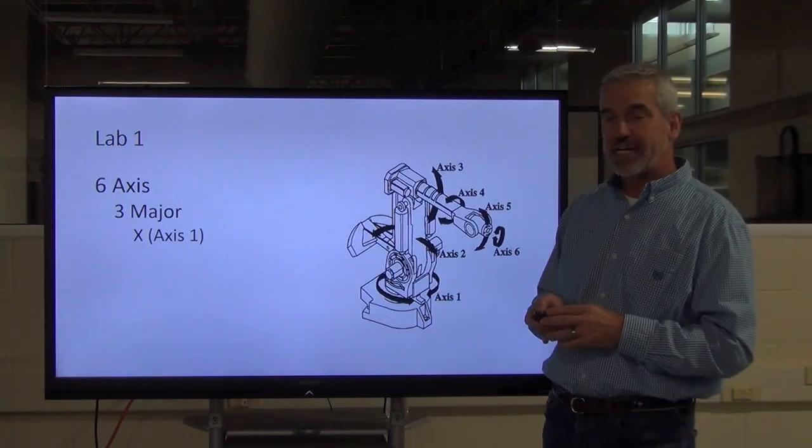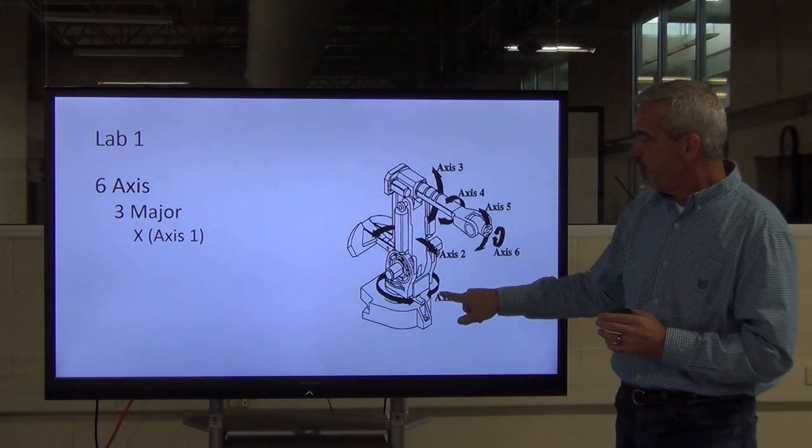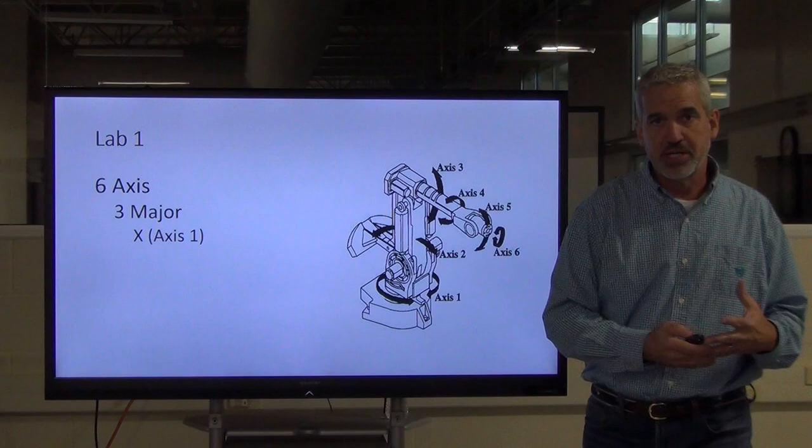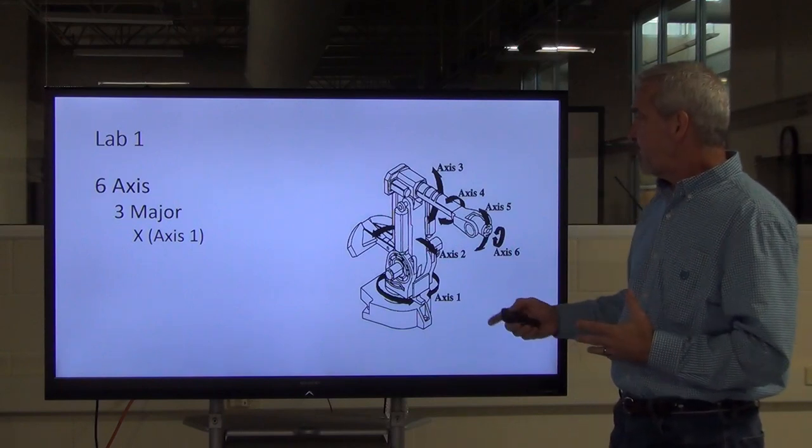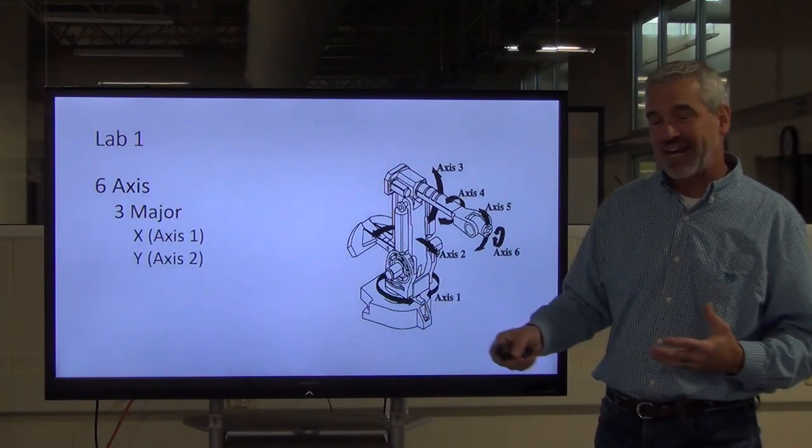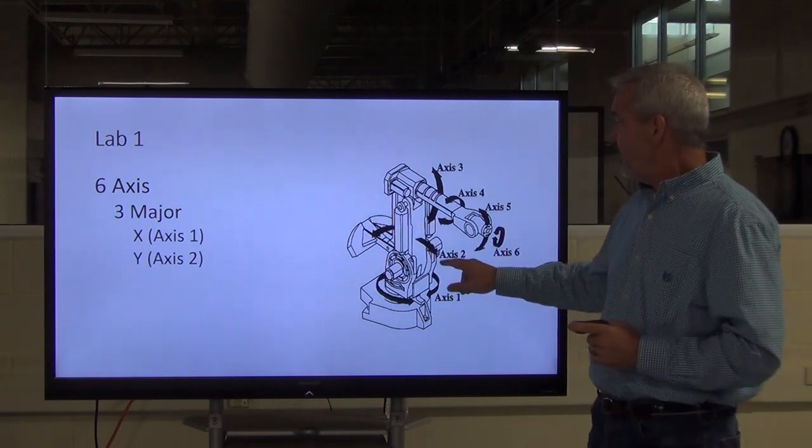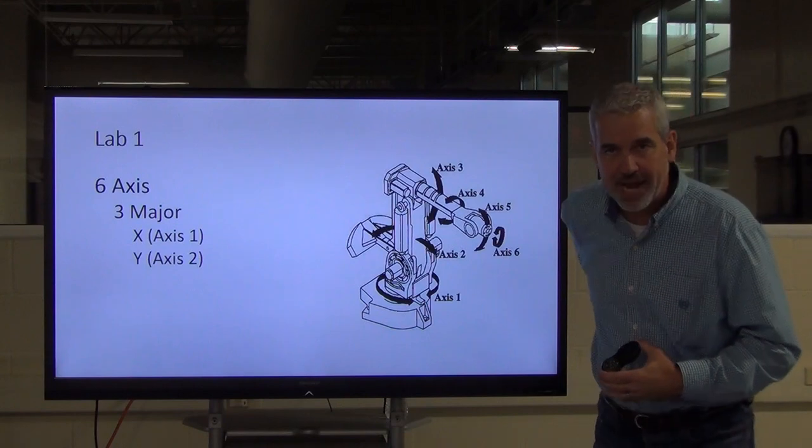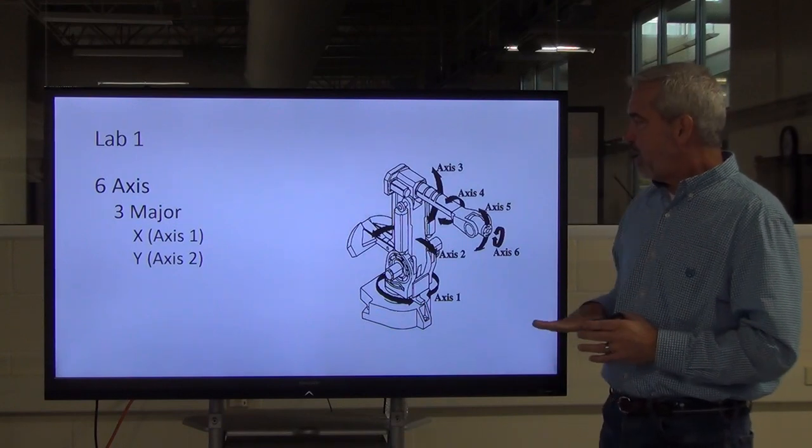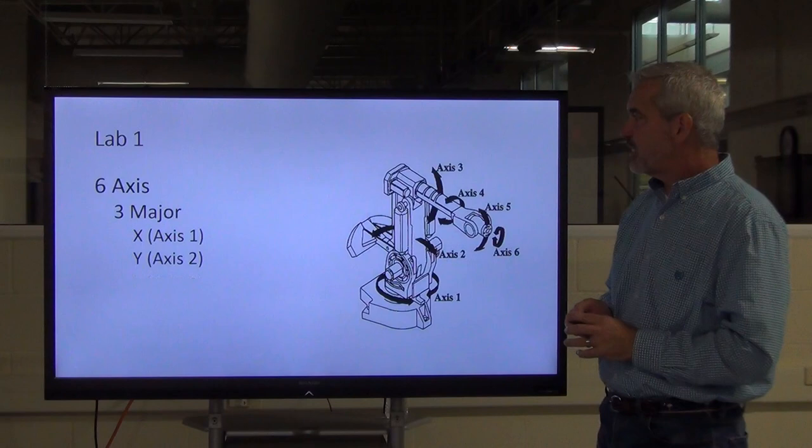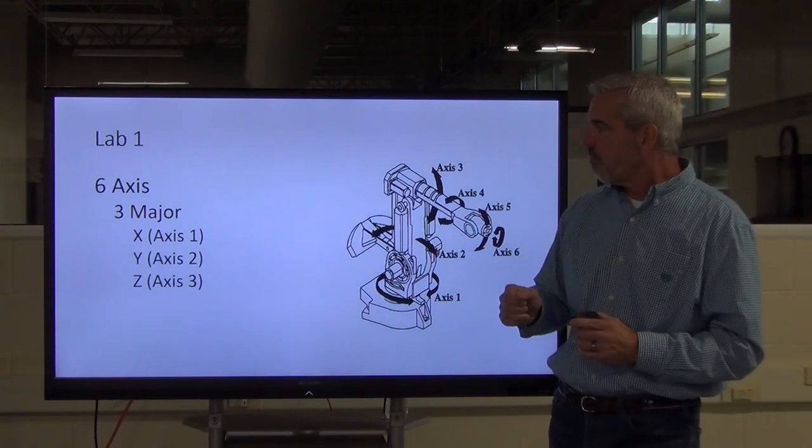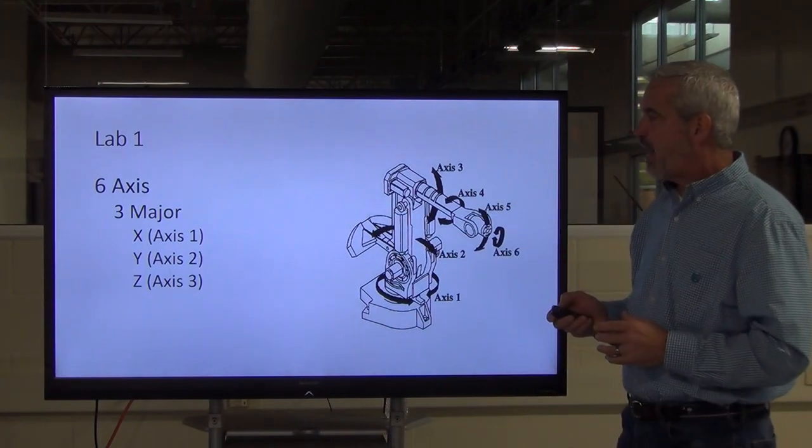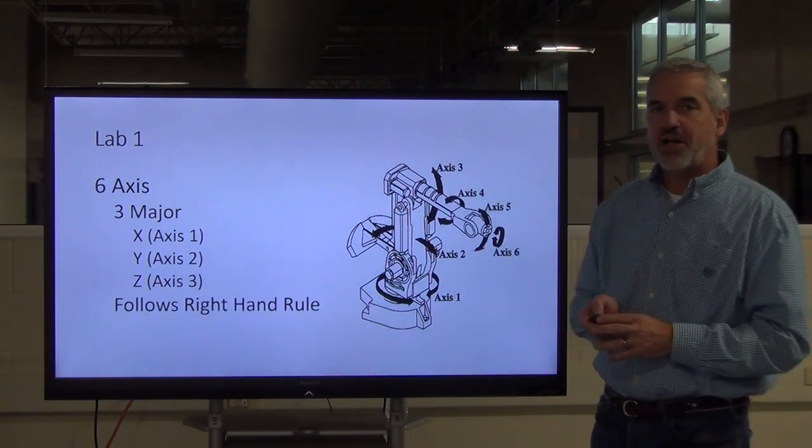And the three major axes, axis number one. This is the one down here. I kind of liken it to swiveling your hips. It's your left and your right motion. Then your axis number two, which is your Y axis. The first one being X, the second one being Y. The Y axis is a lot like you bending over, bending your back a little bit like that. And you can go in and out like that. And then finally, axis number three is a lot like bringing your shoulder in and out. Those are your three major axes. And that follows the right-hand rule. What do I mean by right-hand rule?